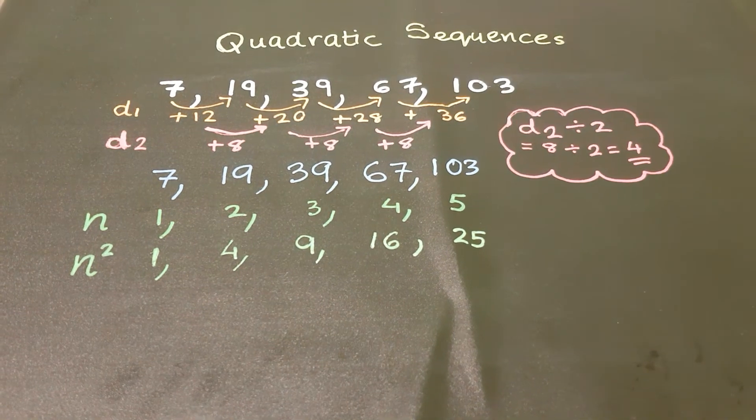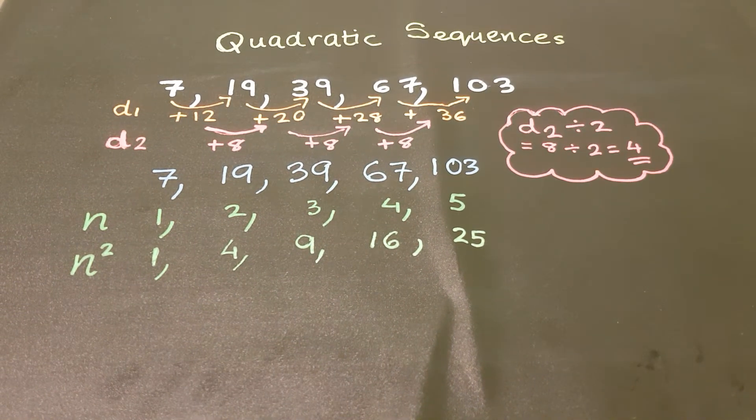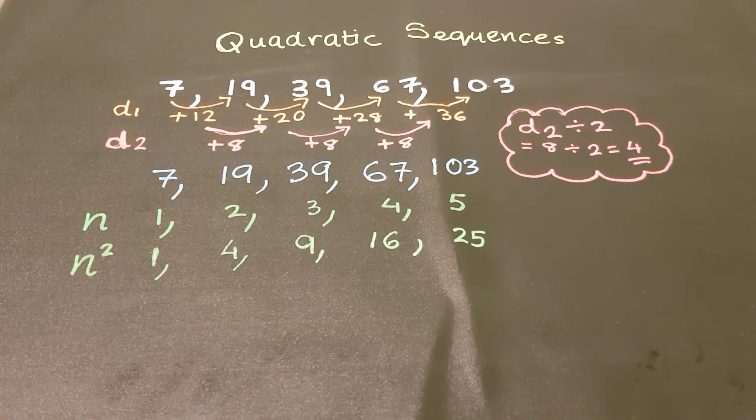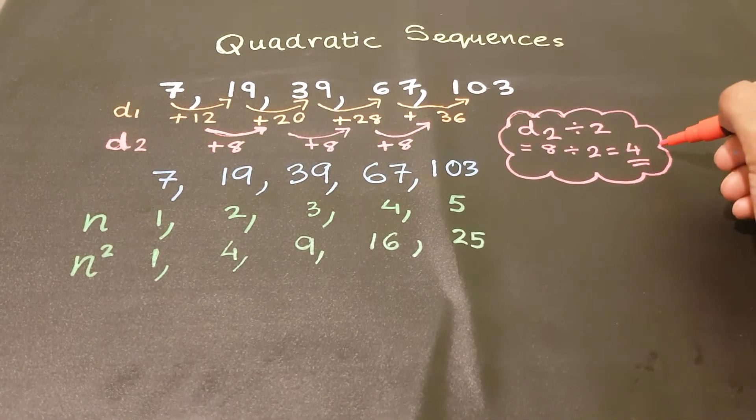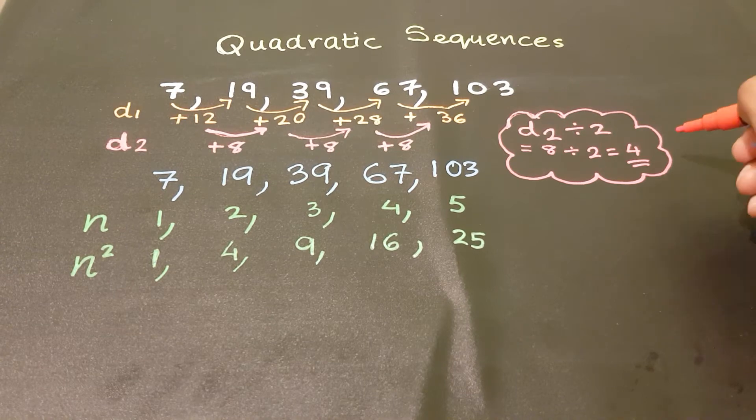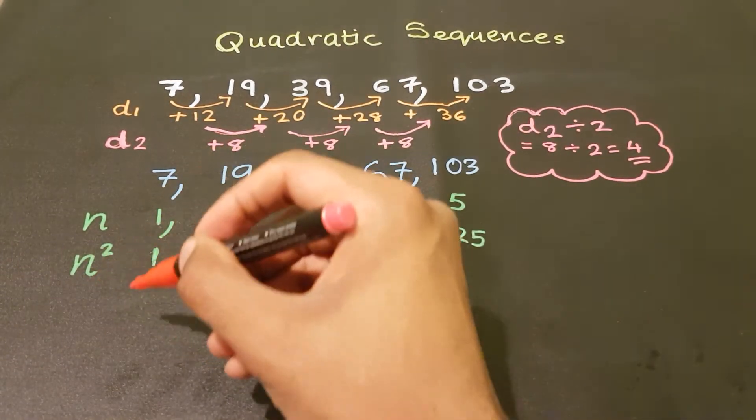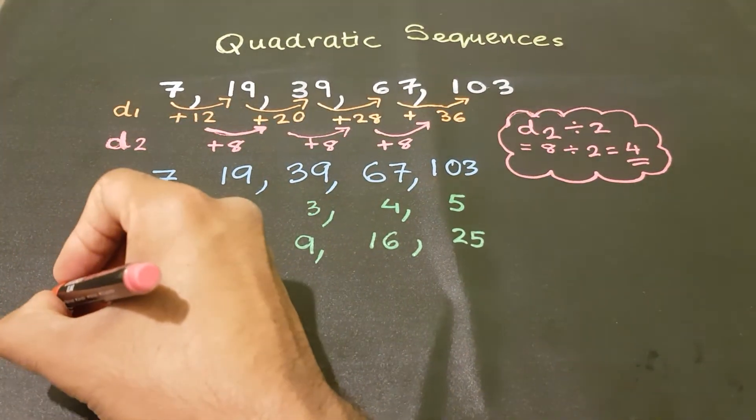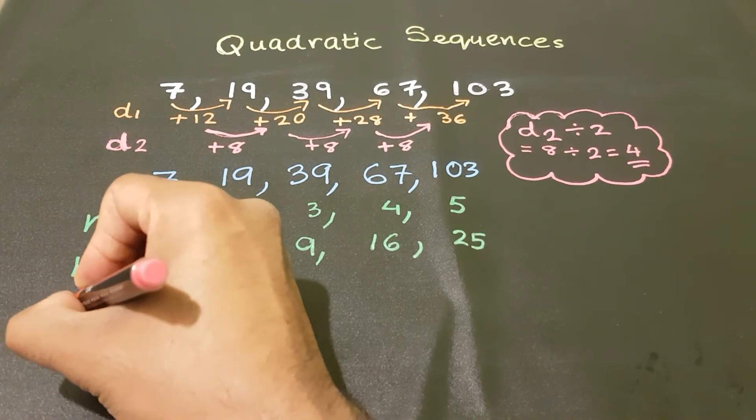Right, once we've done that, now this is where it's the most important step, really. Remember that 4 in the bubble, we are going to multiply our n squared by 4. So here, I'm going to have 4n squared.